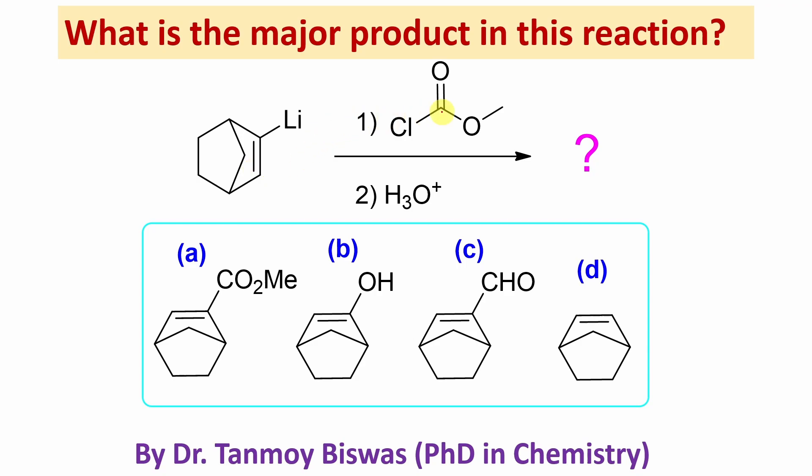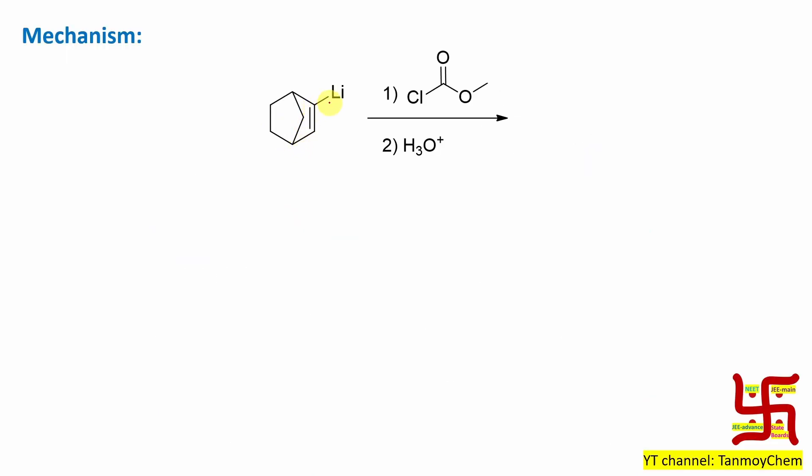What is the major product of this reaction? If you look at here, this is actually a lithium reagent. You may consider it is vinyl lithium. Vinyl lithium means the lithium atom attached to the sp2 hybridized carbon. And actually, if you look at the carbon-lithium bond, it is polar. So you can consider that this is like a carbanion having these two electrons in this sp2 hybridized orbital and lithium is there.